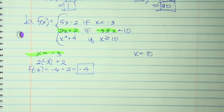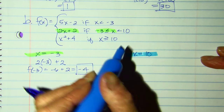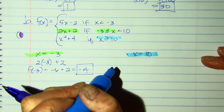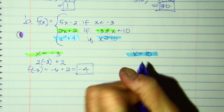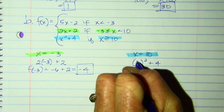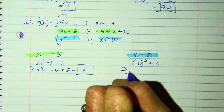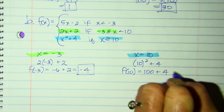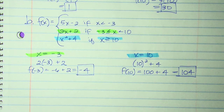For X at 10: the middle piece says less than 10, so I use X squared plus 4 — greater than or equal to 10. Plugging in 10: F of 10 equals 100 plus 4, which is 104.